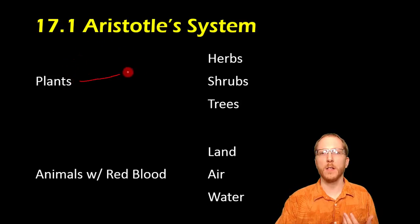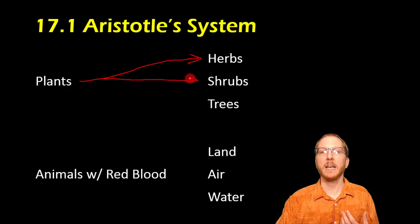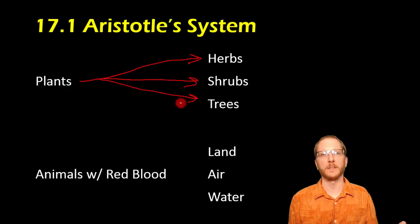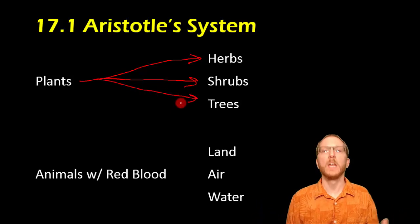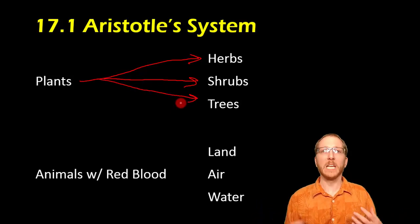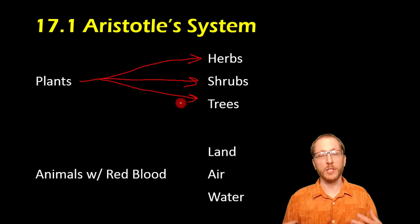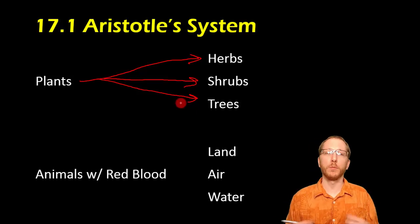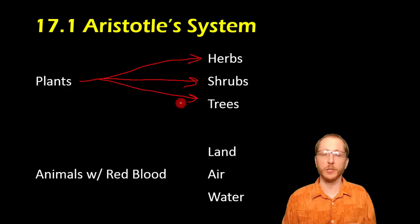You had the smallest guys that were the herbs, the medium guys that were the shrubs, and then the biggest guys that were the trees. So this is a pretty simple way of grouping them. Similarly, animals were classified largely by the color of their blood, which is usually red, but there are some things with blue blood, like crustaceans.